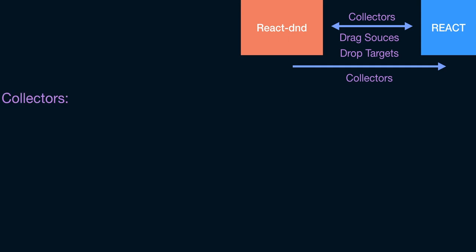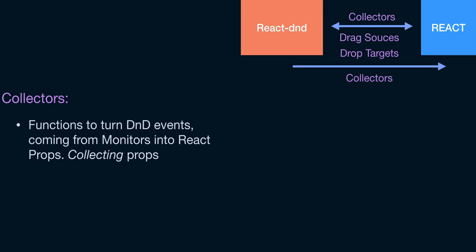What are collectors? In the last video we talked about a context provider called monitors. That context provides different props — basically different state — that is influenced by whatever DnD events happen in the DOM. Collectors are functions that take the state coming from that monitor and turn it into props. That's why we call it 'collecting' props. Monitors communicate what happens in the DOM to React DnD, which converts it into context state, and you write collecting functions to gather props based on whatever happens in the monitor.